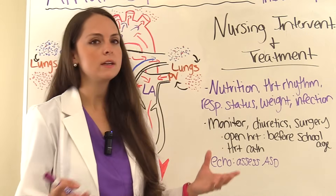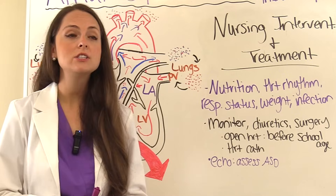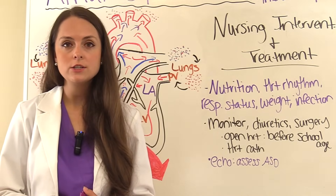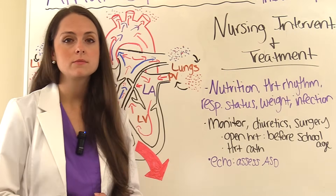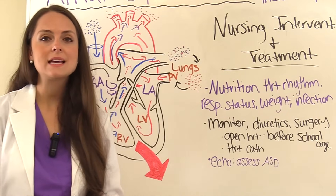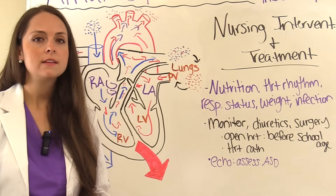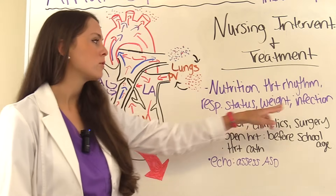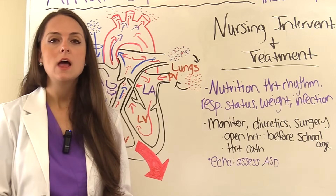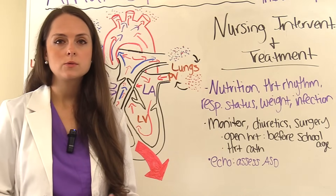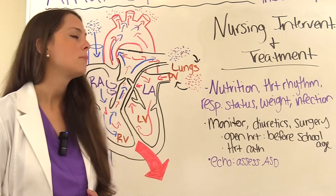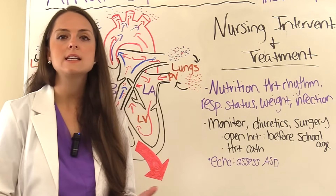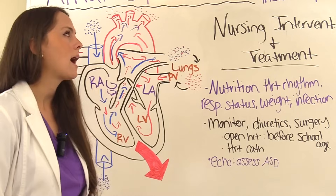From a nursing standpoint, for large ASDs causing complications, focus on nutrition — they may need a feeding tube for extra nutrition if the ASD is interfering with feeding. Monitor heart rhythm for atrial fibrillation. Assess respiratory status by listening to lung sounds for crackles and watching for infection, since they are at risk. Perform infection prevention and educate patients or parents about vaccines to prevent respiratory illnesses, especially if pulmonary hypertension develops. Monitor weight and apply nursing diagnoses: activity intolerance, decreased cardiac output, excessive fluid volume, and risk for infection.